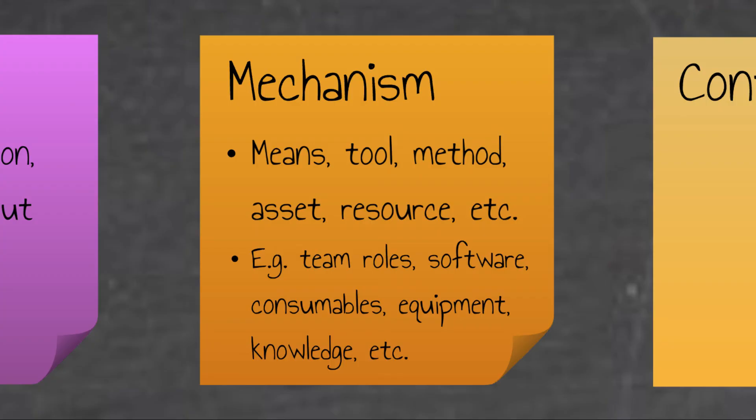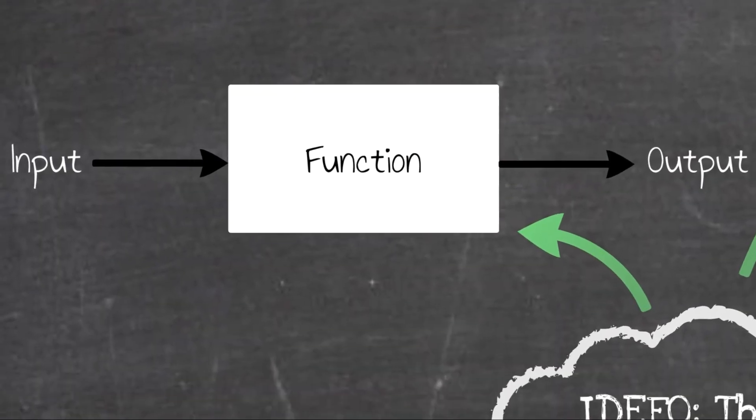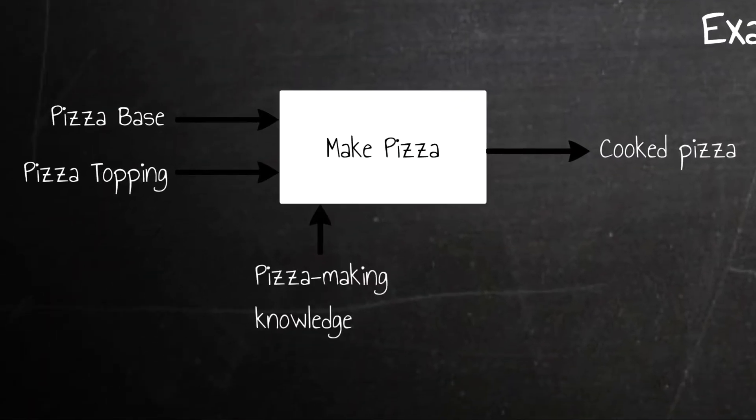In IDEF0, a mechanism is designated by an arrow originating from the bottom of a function and going into it. There's of course a bit of text to say what the arrow means. For instance, if we go back to our make pizza function, one mechanism could be pizza-making knowledge, as an example of an intangible mechanism, and another could be oven, which is a tangible equipment for baking pizzas.